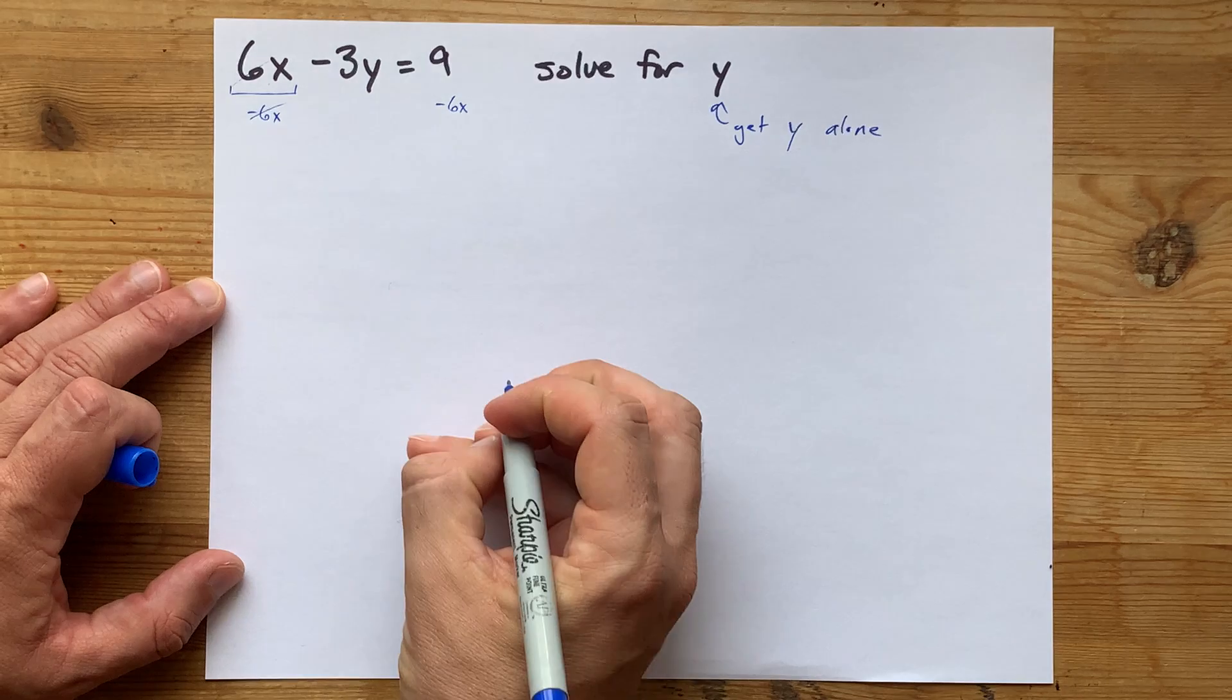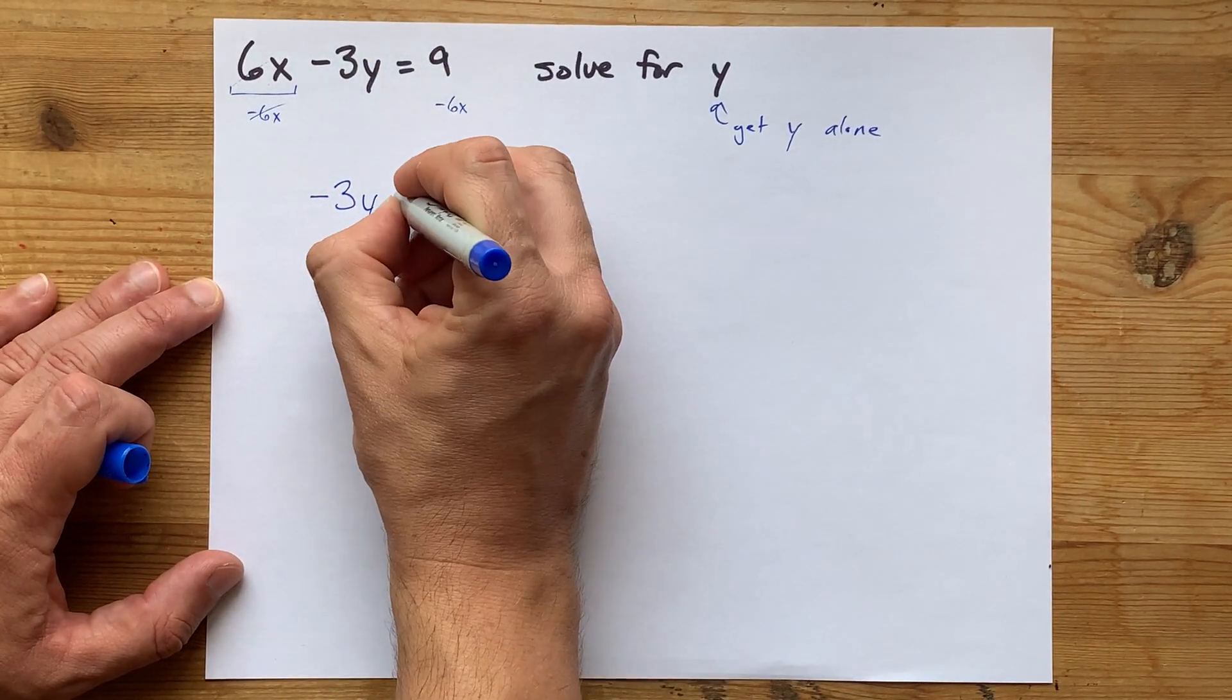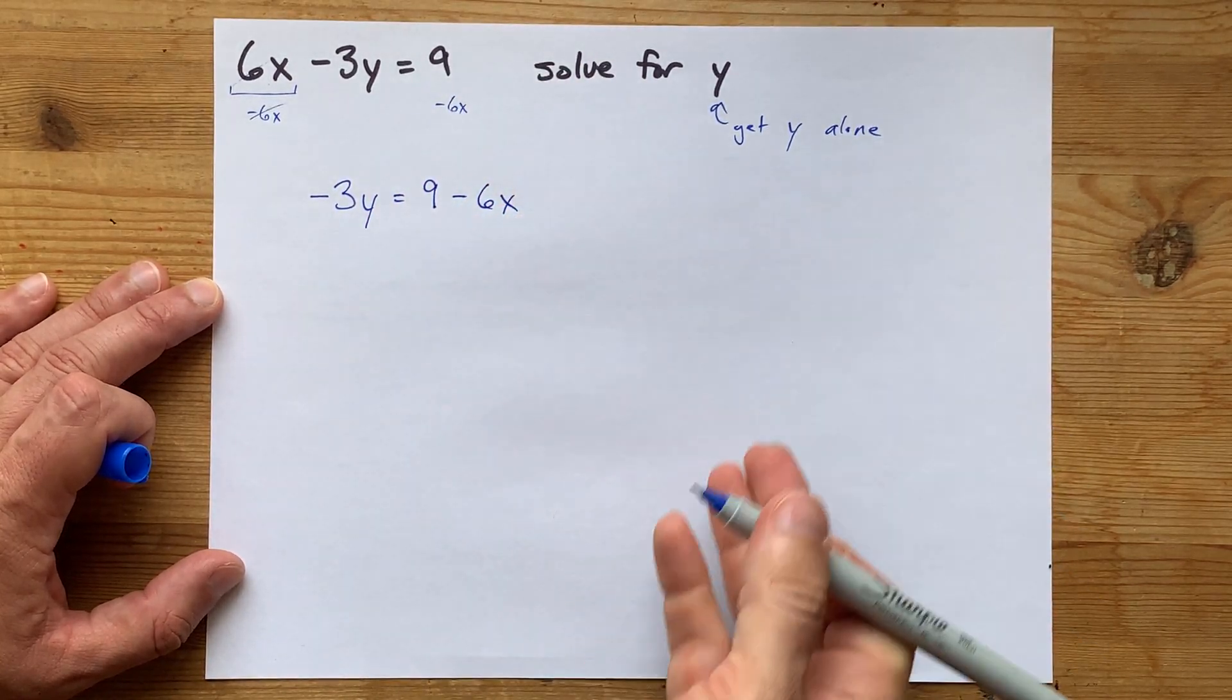Those cancel each other out, and on the left-hand side here, I'm left with negative 3y. On the right-hand side, I have 9, and I'm subtracting 6x from that.